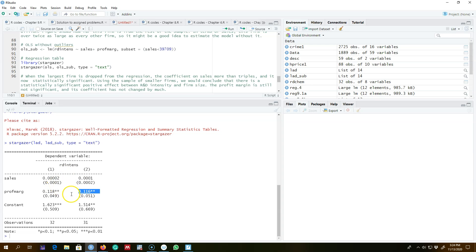So this least absolute deviation method is a special case of quantile regression, which I'm going to show you in the next video.